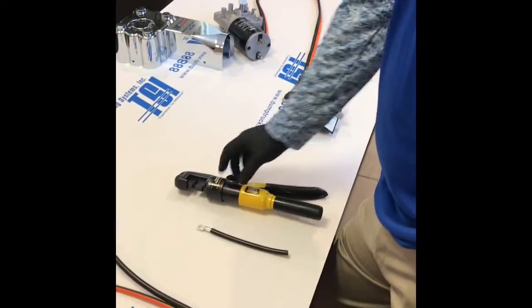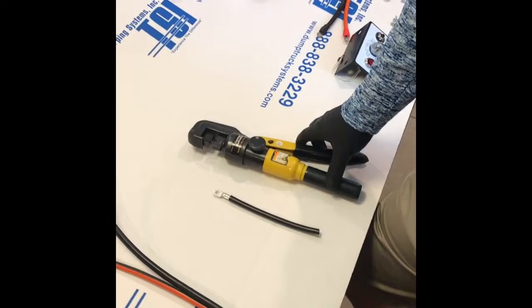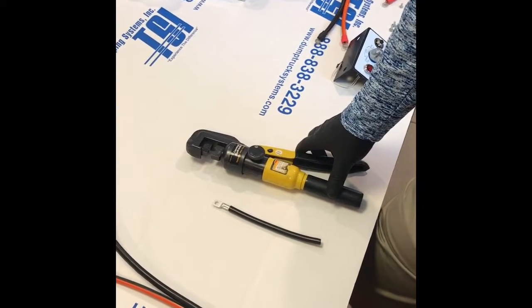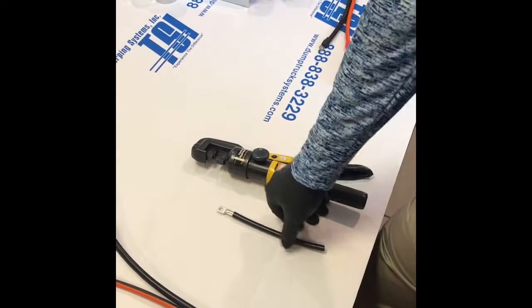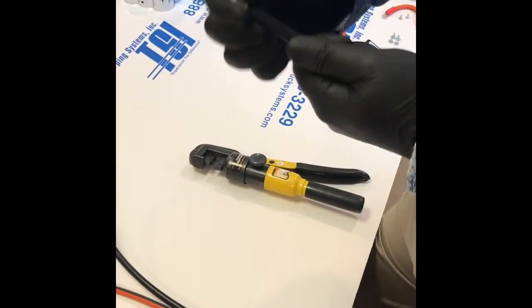Hey guys, we're here at Tarping Systems. We're going to go over the installation procedure for our rotary switch kit, part number T-RSK. The first thing I want to touch on is we're using heavy wall copper and heavy wall ring terminals.